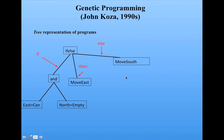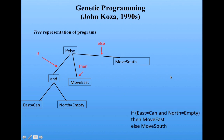This particular program is an if-then-else statement at the root. It says: if there's a can in the east and the north is empty, then the robot should move east, otherwise the robot should move south. That's what this tree represents, and you can look at it as a regular kind of program: if east equals can and north equals empty, then move east, else move south.